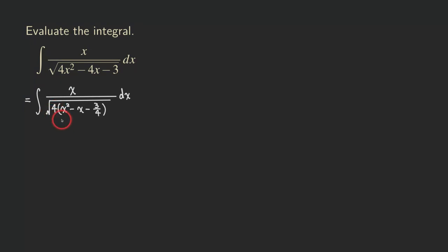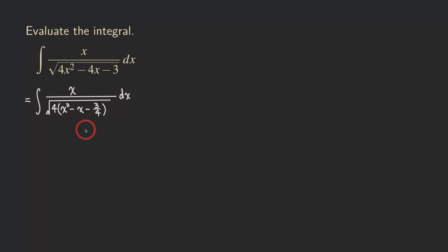Now we need to complete the square on this expression: x-squared minus x, with a negative 3 over 4. We don't need to worry about that constant yet. All we need to do is take the coefficient of the linear term, which is negative 1, multiply by one half to get negative one half, and then square it. That's what you need to add to complete the square — that's actually 1 fourth that we are adding.